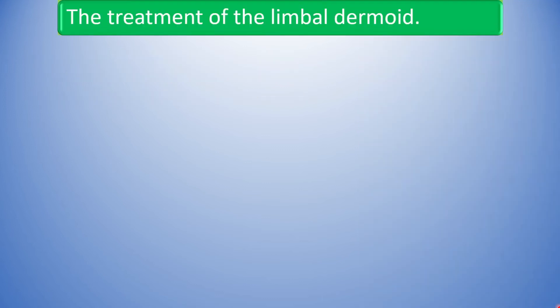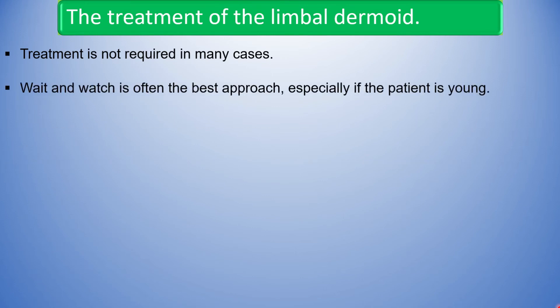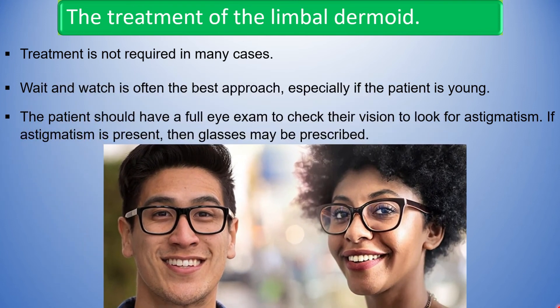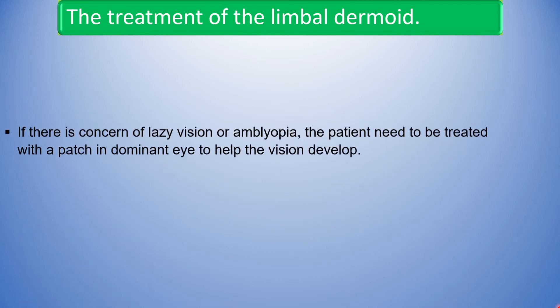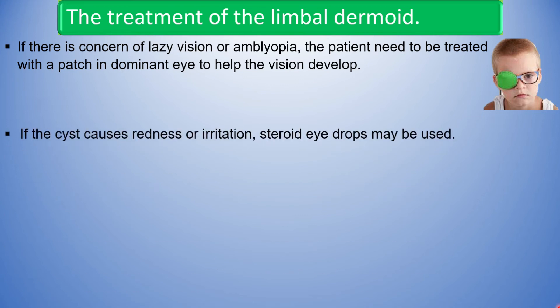Treatment is not required in many cases. Wait and watch is often the best approach, especially if the patient is young. The patient should have a full eye exam to check their vision and to look for astigmatism. If astigmatism is present, then glasses may be prescribed. If there is concern of lazy eye or amblyopia, the patient may need to be treated with a patch on the other eye to help the vision develop. If the cyst causes redness or irritation, steroid eye drops may be used.